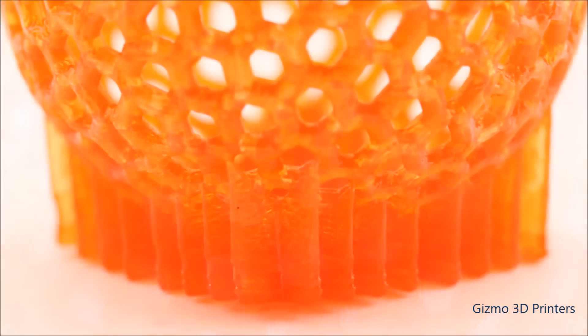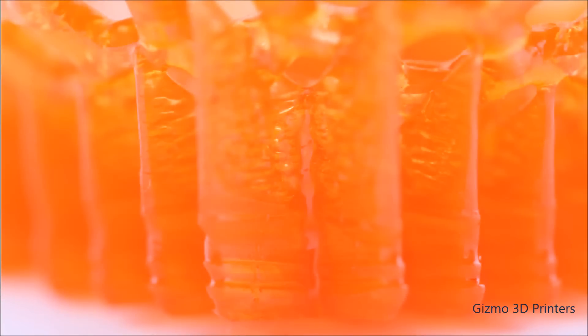The supports do have some layering because they were printed thicker. This shows the limitations of continuous printing. The wall thickness of the part needs to be thin to be able to produce a layerless part.